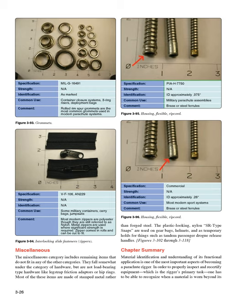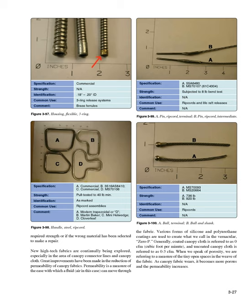Chapter Summary: Material identification and understanding of its functional application is one of the most important aspects of becoming a parachute rigger. In order to properly inspect and recertify equipment — the rigger's primary task — one has to be able to recognize when a material is worn beyond its required strength, or if the wrong material has been selected to make a repair. New high-tech fabrics are continually being explored, especially in the area of canopy connector lines and canopy cloth. Great improvements have been made in the reduction of permeability of canopy fabrics. Permeability is a measure of the ease with which a fluid — air in this case — can move through the fabric. Various forms of silicone and polyurethane coatings are used to create what is called 0P fabric. Coated canopy cloth is referred to as 0 CFM (cubic feet per minute), and uncoated canopy cloth is referred to as 0-3 CFM. When we speak of porosity, we are referring to a measure of the tiny open spaces in the weave of the fabric. As canopy fabric wears, it becomes more porous and the permeability increases.